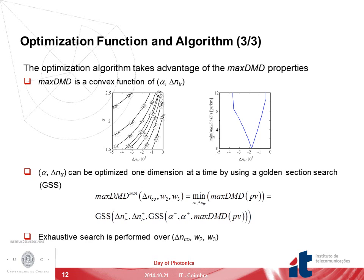The optimization algorithm takes advantage of the max DMD properties. We found that max DMD is a convex function of α and ΔN range. Thereby, α and ΔN range can be optimized one dimension at a time using a golden section search, and the remaining parameters — ΔNCO, W2, and W3 — were optimized by performing an exhaustive search.